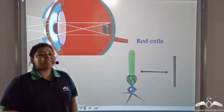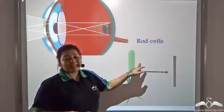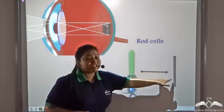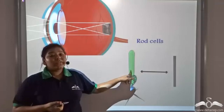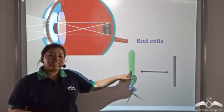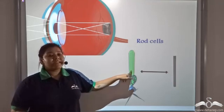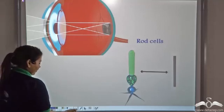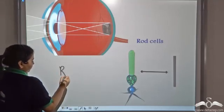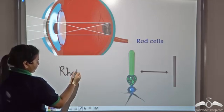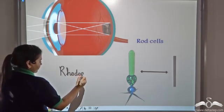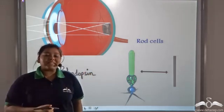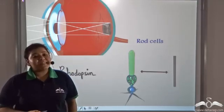The second sensory cell is called the rod cells — rod because this portion of the cell is rod-shaped. Now rod cells are activated in dim light, and the pigment present in the rod cells is known as Rhodopsin. Rhodopsin helps in vision in dim light.